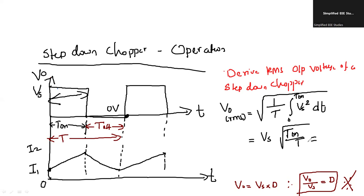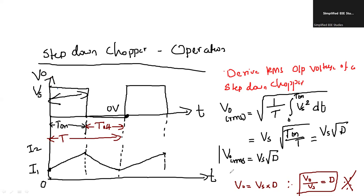We already know that T_on / T is nothing but duty ratio D. So we write square root of D. Therefore, V_naught_RMS = Vs × √D. This is the most important equation which you can expect in GATE level or university examination.